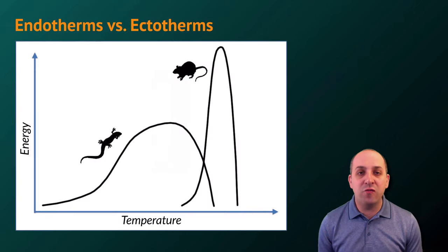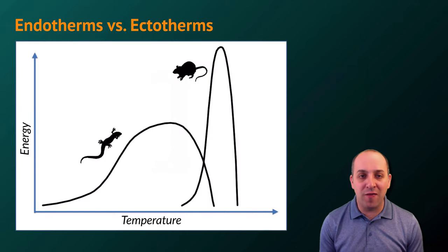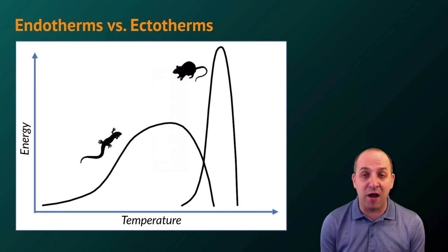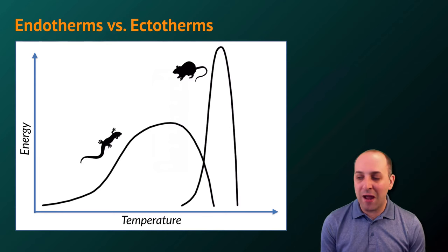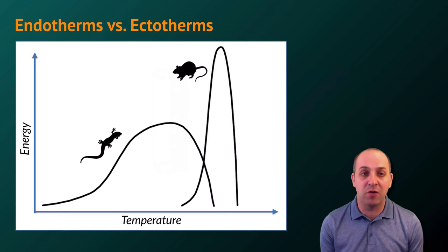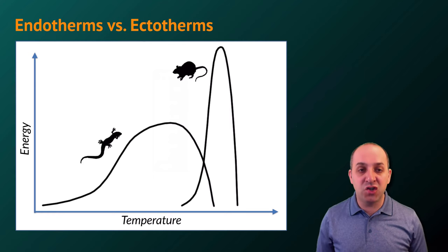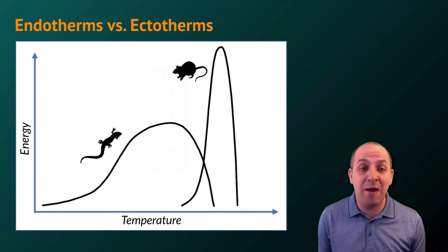It's important to understand that one strategy is not better than the other. They both function, and they both produce life forms that are well adapted for the environments in which they live. But as this graph shows, endotherms like the lizard shown here can tolerate a much wider range of environmental temperatures than endotherms can. If you subject that mouse to conditions where its internal temperature moves outside of that narrow range of acceptable internal temperatures, that mouse is going to die.